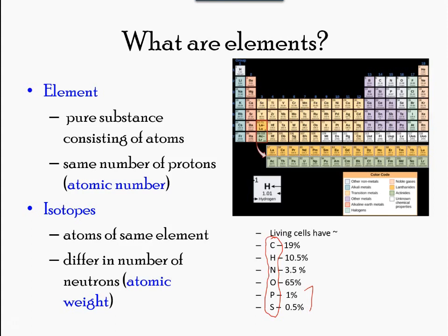All atoms contain protons, electrons, and neutrons, as seen in this figure. The only exception is hydrogen, which is made of one proton and one electron.